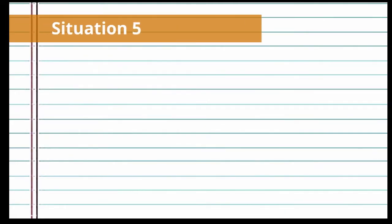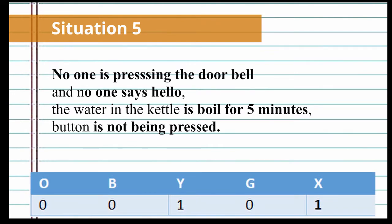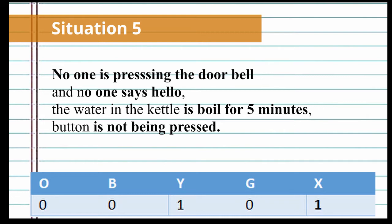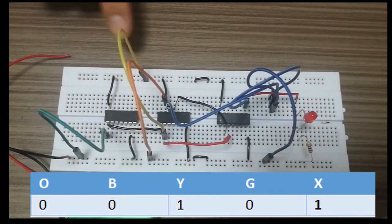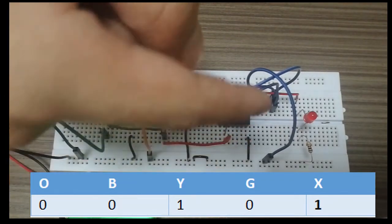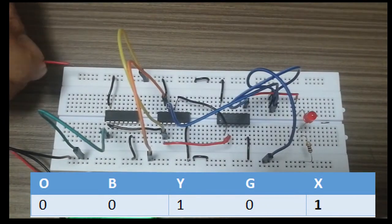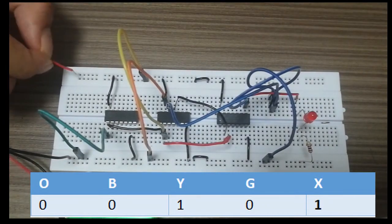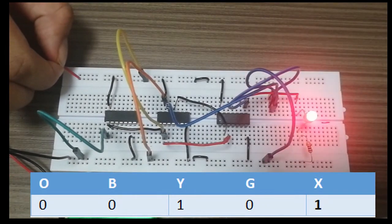For situation 5, when no one is pressing the doorbell and no one says hello, but the water in the kettle is boiling for 5 minutes while no button is being pressed — this is equivalent to Y connected to high while G, O, and B are connected to low. When we connect our battery to the circuit, the LED will light up.